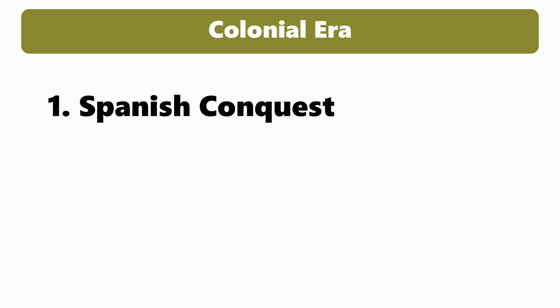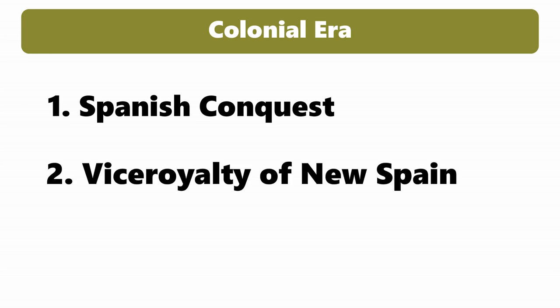Colonial Era. 1. Spanish Conquest: Hernán Cortés and his expedition came to Mexico in 1519 and toppled the Aztec Empire with the support of local allies. This was the start of Spanish colonial rule. 2. Viceroyalty of New Spain: Mexico was incorporated into the Spanish Empire as the Viceroyalty of New Spain. The adoption of Catholicism was one of the cultural, religious, and societal changes brought about by Spanish colonial control.